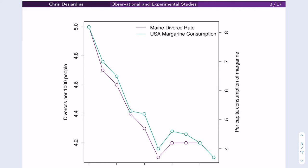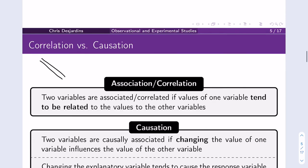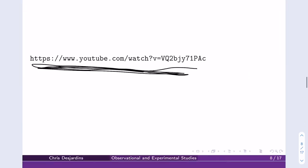If you go to the spurious correlations website, you're going to see a lot of interesting correlations that are really just caused by this third variable — time. It's very common for variables that change over time to appear related to one another. Any variable that decreases over time will look related to any other variable that also decreases over time, because it's just an artifact of time.